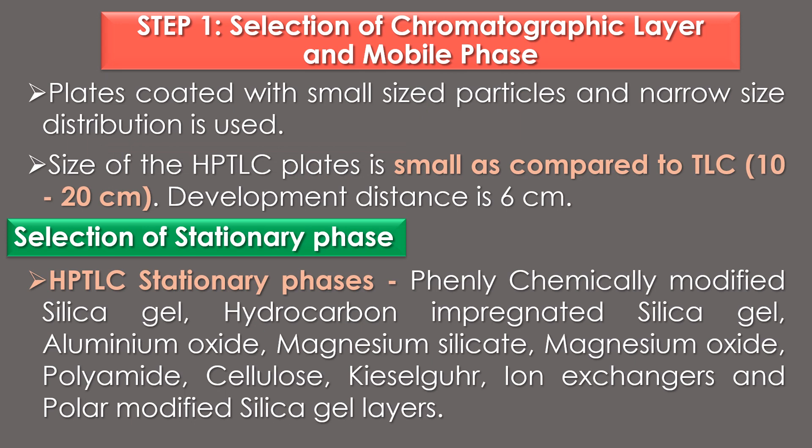Step 1: selection of chromatographic layer and mobile phase. In HPTLC, plates coated with small size particles and narrow size distribution are used. Thus, the surface area of the plate is smooth. The size of the plates is comparatively small compared to the TLC plate, and the development distance is 6 cm.